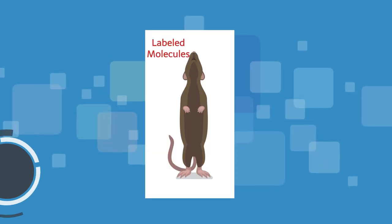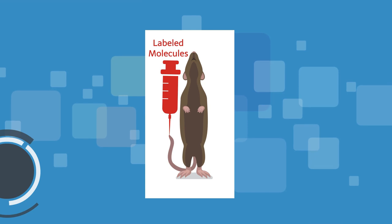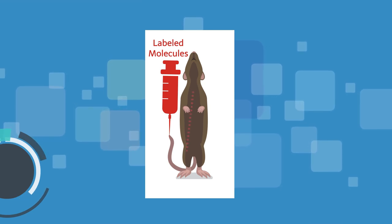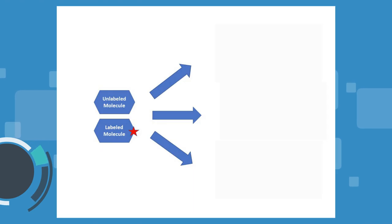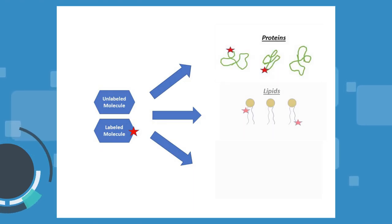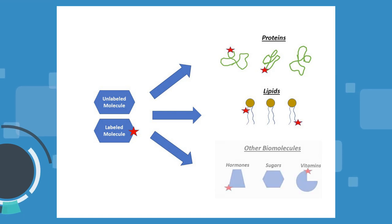One common way for researchers to study this is to introduce labeled molecules into different experimental systems, such as research animals. The labeled molecules are easy to tell apart from the other molecules that make up our metabolism and can be monitored to see how they are broken down and incorporated into new biomolecules.